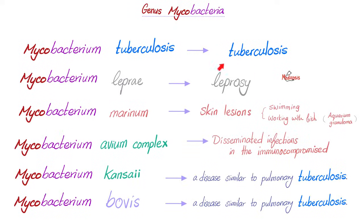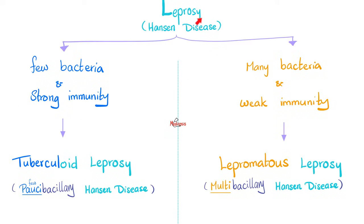Mycobacterium leprae causes leprosy, also known as Hansen disease, named after the scientist who discovered it. We have two types: tuberculoid leprosy versus lepromatous leprosy. In tuberculoid leprosy, it is similar to tuberculosis — we have a granuloma.